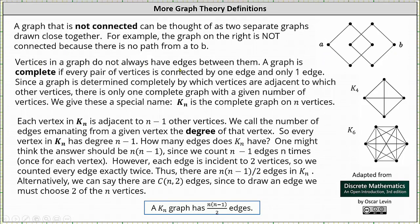Vertices in a graph do not always have edges between them. A graph is complete if every pair of vertices is connected by one edge and only one edge. Since a graph is determined completely by which vertices are adjacent to which other vertices, there is only one complete graph with a given number of vertices. We give these a special name. K sub n or just K_n is the complete graph of n vertices. On the right, we have the graph of K_4 and the graph of K_6.